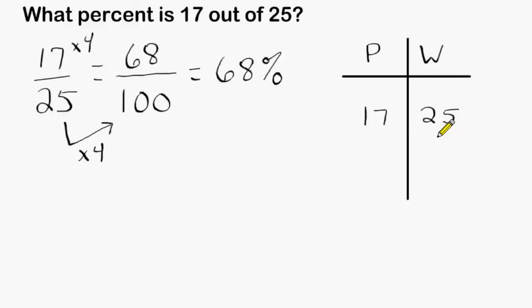Next, write 100 in the whole column because a percentage is always out of 100, and we have to figure out what number we write directly next to 100 to make this a true statement. Notice in the whole column, 25 increases by a factor of 4, so we have to do the same thing on the other side. So increasing 17 by a factor of 4 will give us 68.